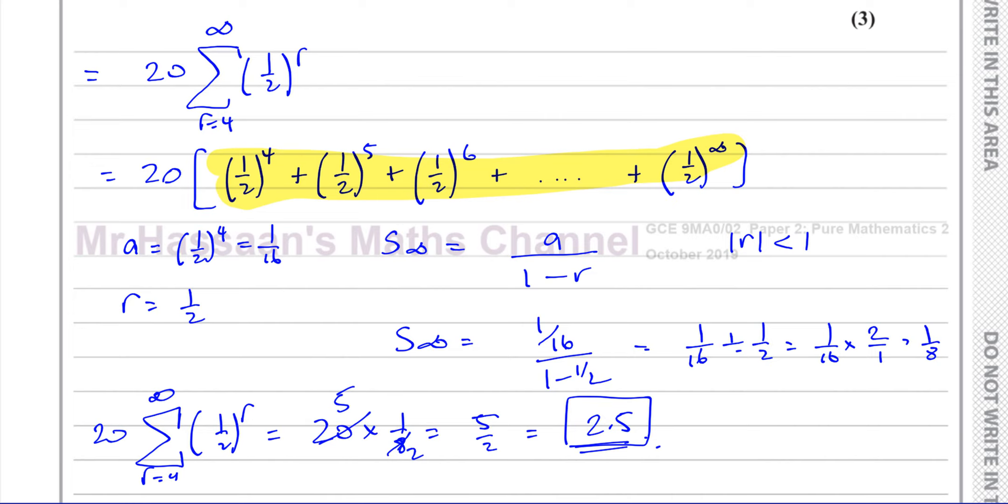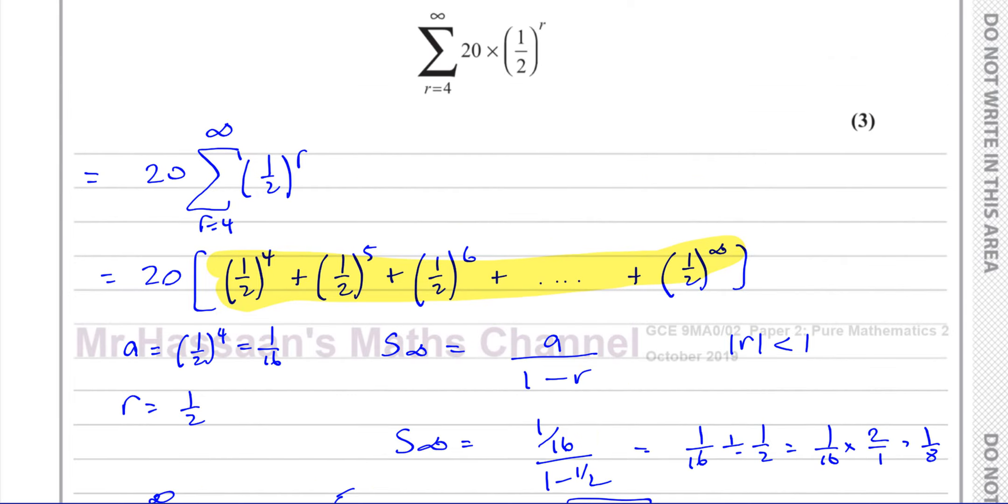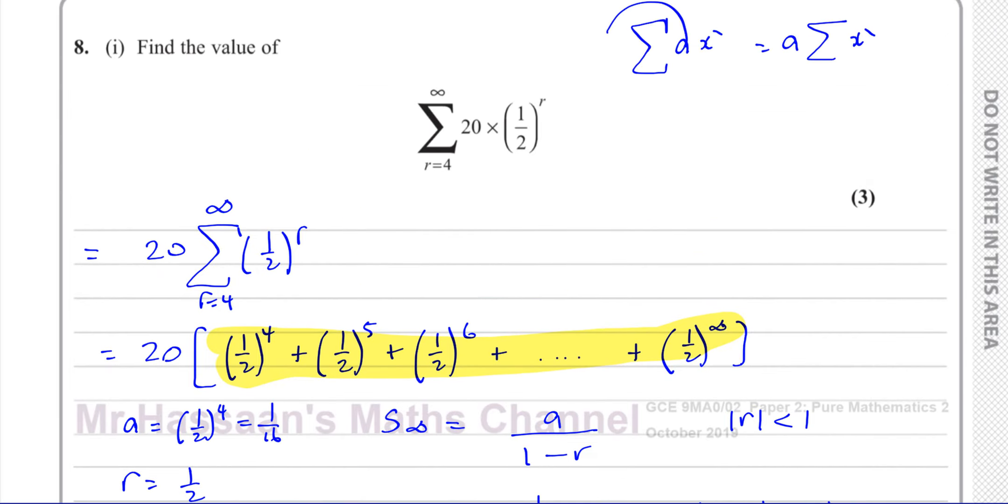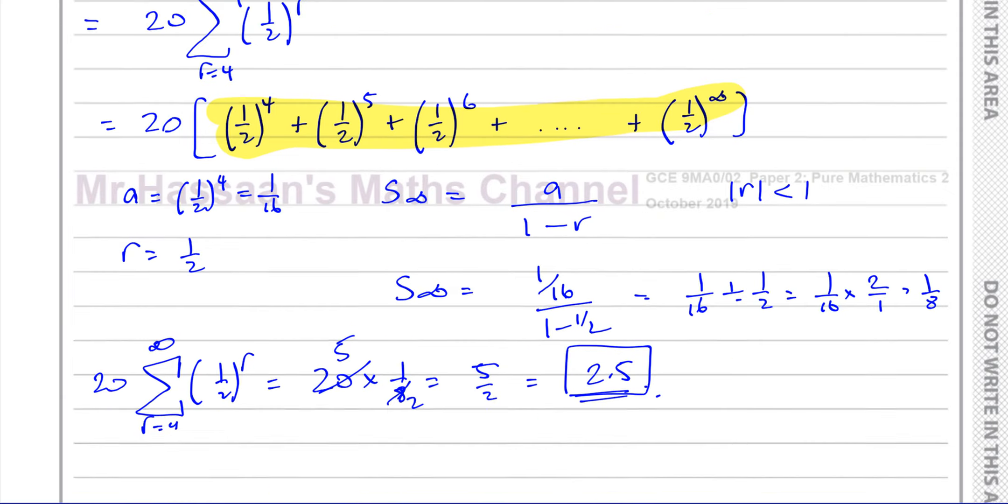So basically, this is just a flashy way of them telling you to find the sum to infinity of this geometric series. They could have said find the sum to infinity of this series, but they've just written it in this form. And the first term was 20 times a half to the power of 4, and of course is an infinite number of terms. So it's just a flashy way of saying, or a scary way of saying, find the sum to infinity. That's all it is. So nothing to be afraid of at all.